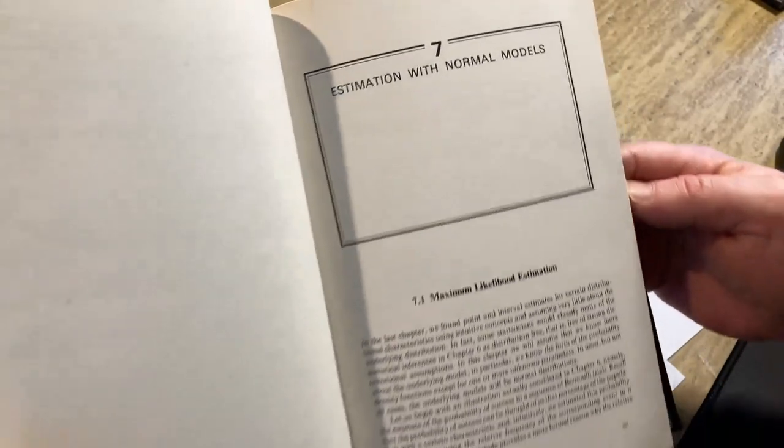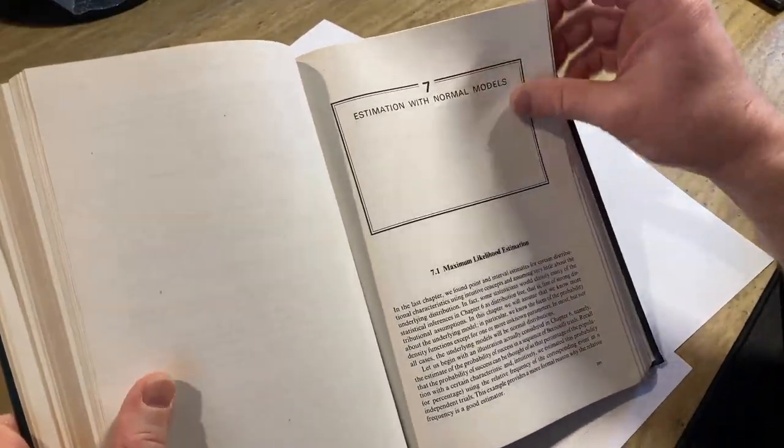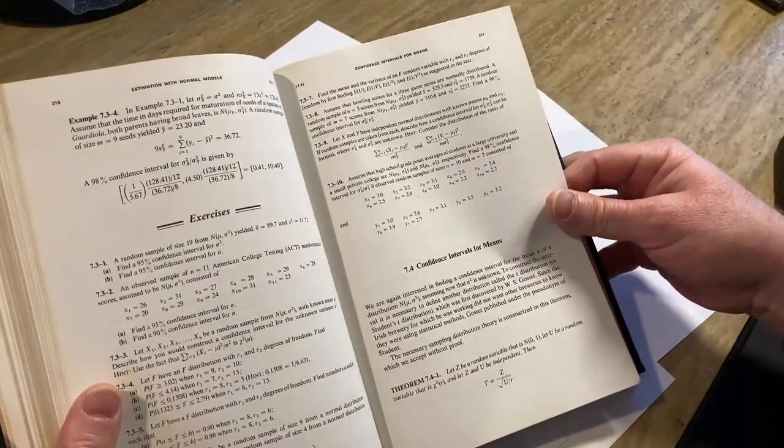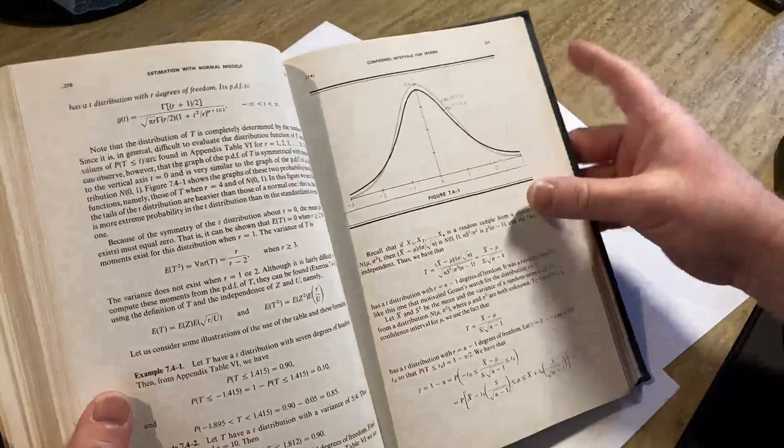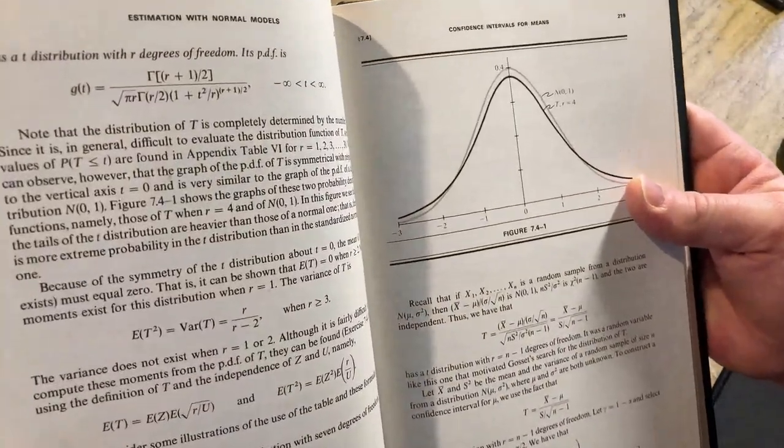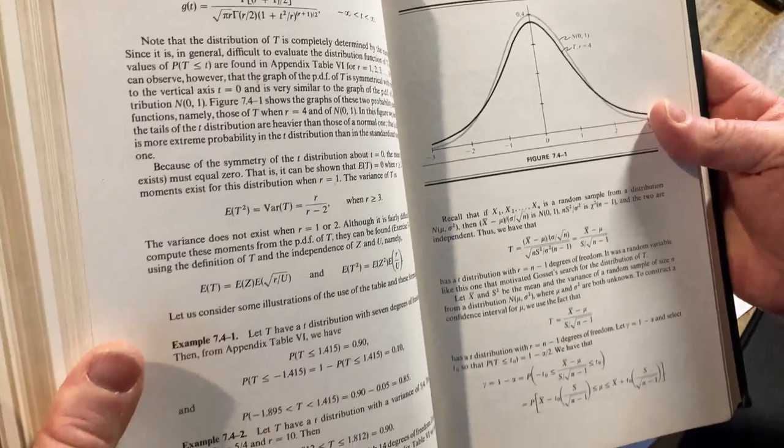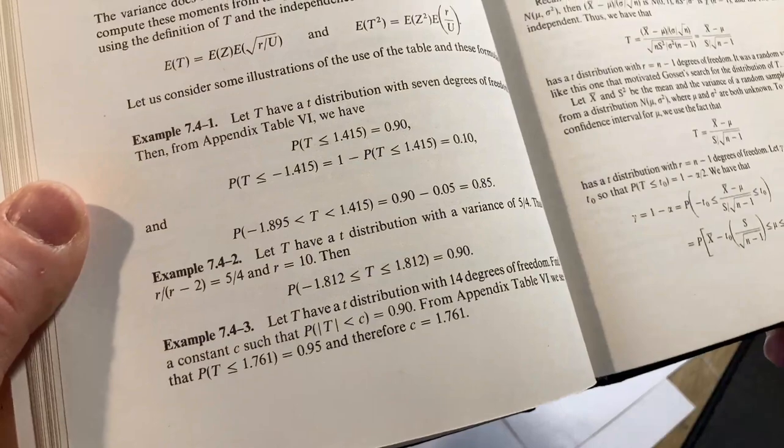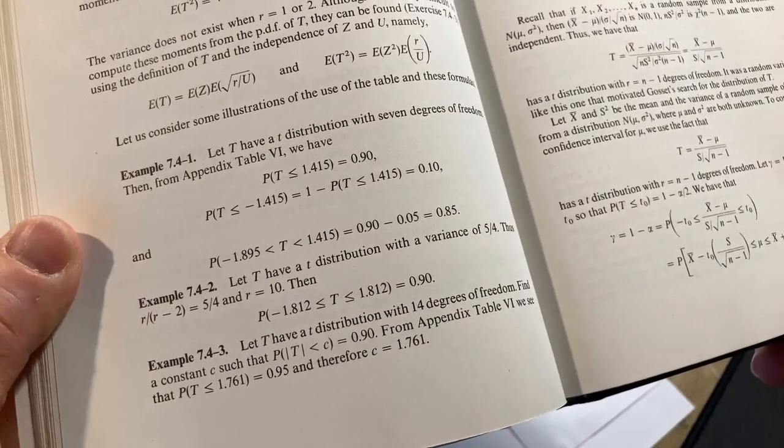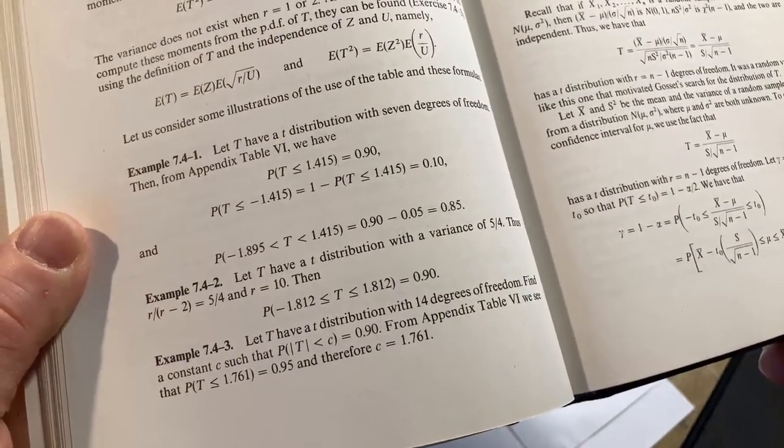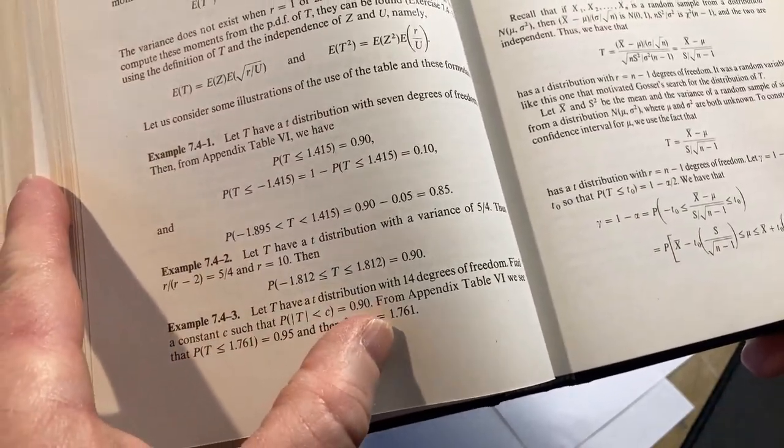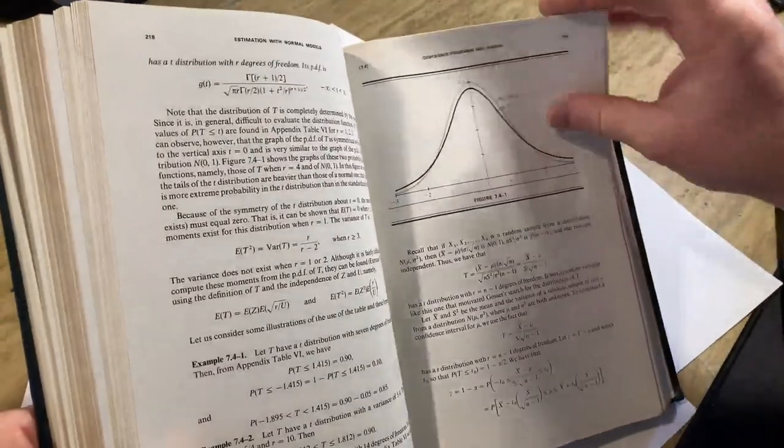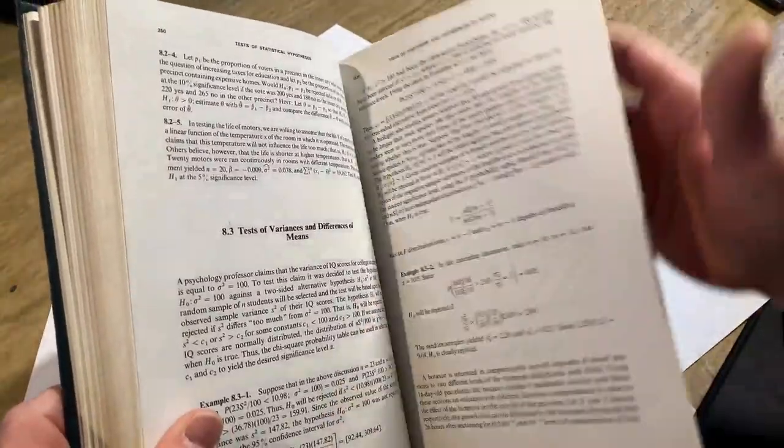Estimation with normal models. Likelihood estimation. Here we go. More confidence intervals for means. Here's the normal. It looks like the... Beautiful, right? That's the t-distribution. Here it says, let big T have a little t-distribution with 14 degrees of freedom. Find a constant C such that the probability... And they have that probability there saying it's 0.9. Go through and draw some pictures. So it does use a lot of heavy mathematics.